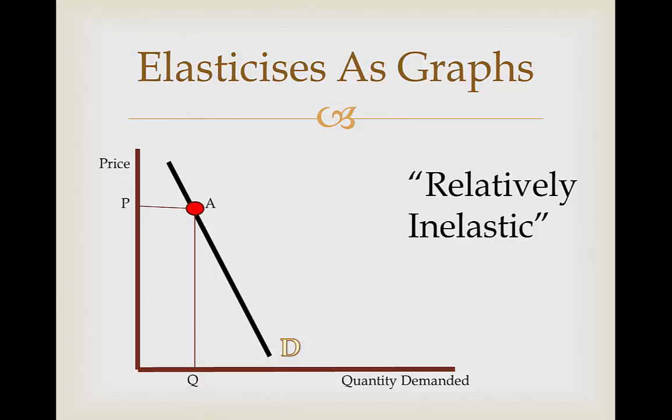So we can stick on our point A and draw off our points into the price and quantity demanded axes and then point B. This time we can see that a big change in price doesn't really influence the change in quantity demanded much.